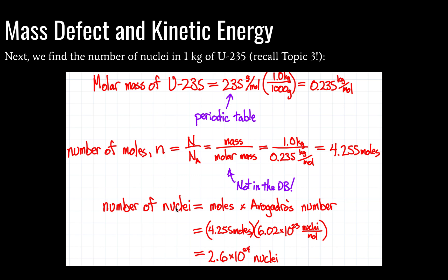So, the number of nuclei, then, is going to be equal to the number of moles times Avogadro's number. And look, this actually is the equation in your data booklet. Nice. So we run through our algebra, and we find that we have 2.6 times 10 to the 24 nuclei. Sweet.